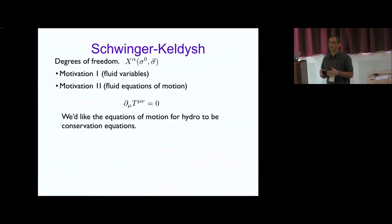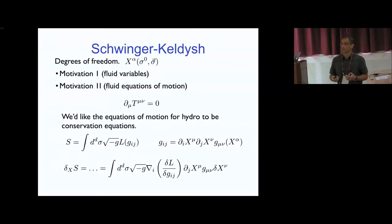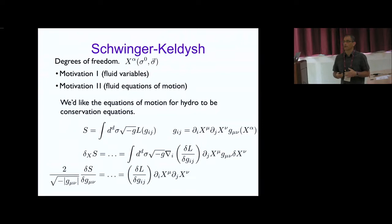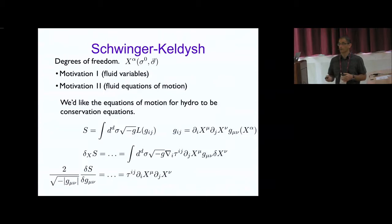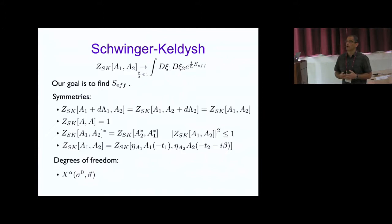The second motivation for using these variables has to do with the fluid equations of motion themselves. We want the equations of motion for the x variables to reproduce the conservation equations of hydrodynamics. If we define g_{ij} as the pullback of the metric in the target space, the equations of motion take this form, and the energy-momentum tensor takes this form. One can check that conservation of the energy-momentum tensor is equivalent to the equations of motion for the x field. The same applies for the charge current.